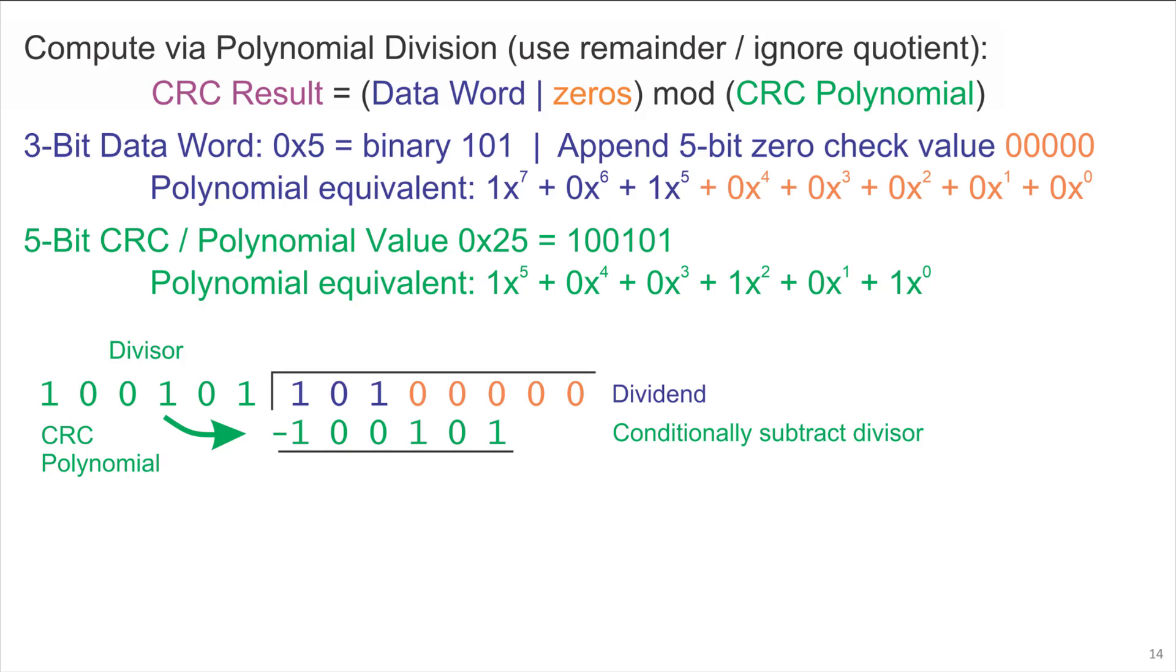But it's not an ordinary subtraction because this is polynomial math. We do it on a coefficient by coefficient basis, and because the coefficients are limited to binary values, we use an XOR operation, exclusive OR.